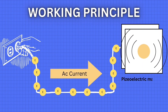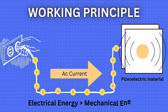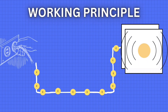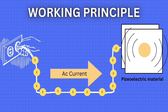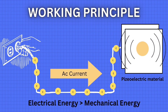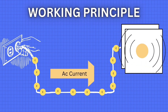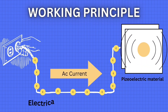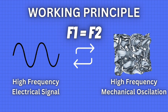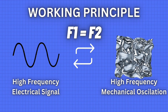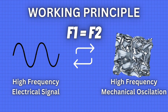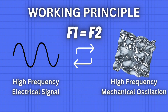Let's check the working principle of the piezoelectric material. In this video you can see we are supplying a piezoelectric material with an AC power source. When we supply the piezoelectric material with an AC power source, it starts to vibrate — the electrical energy has been converted into mechanical energy. The frequency of that AC signal is now equal to the frequency of the piezoelectric material, so the high frequency electrical signal has been converted into high frequency mechanical oscillation.